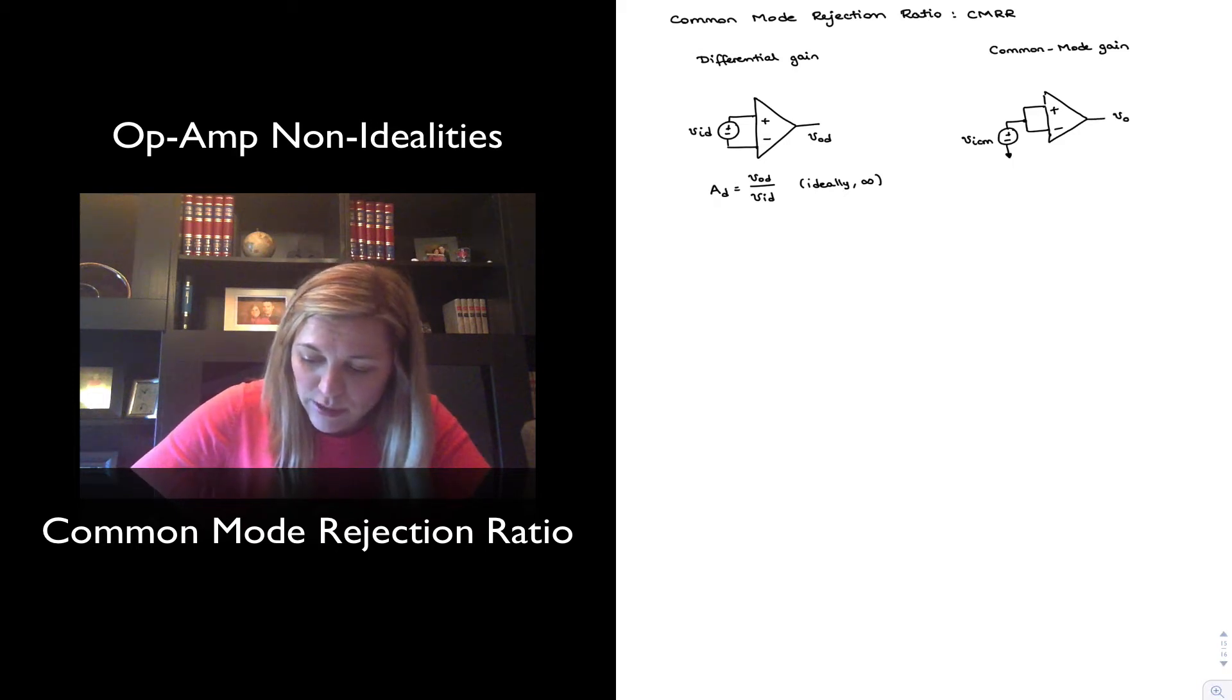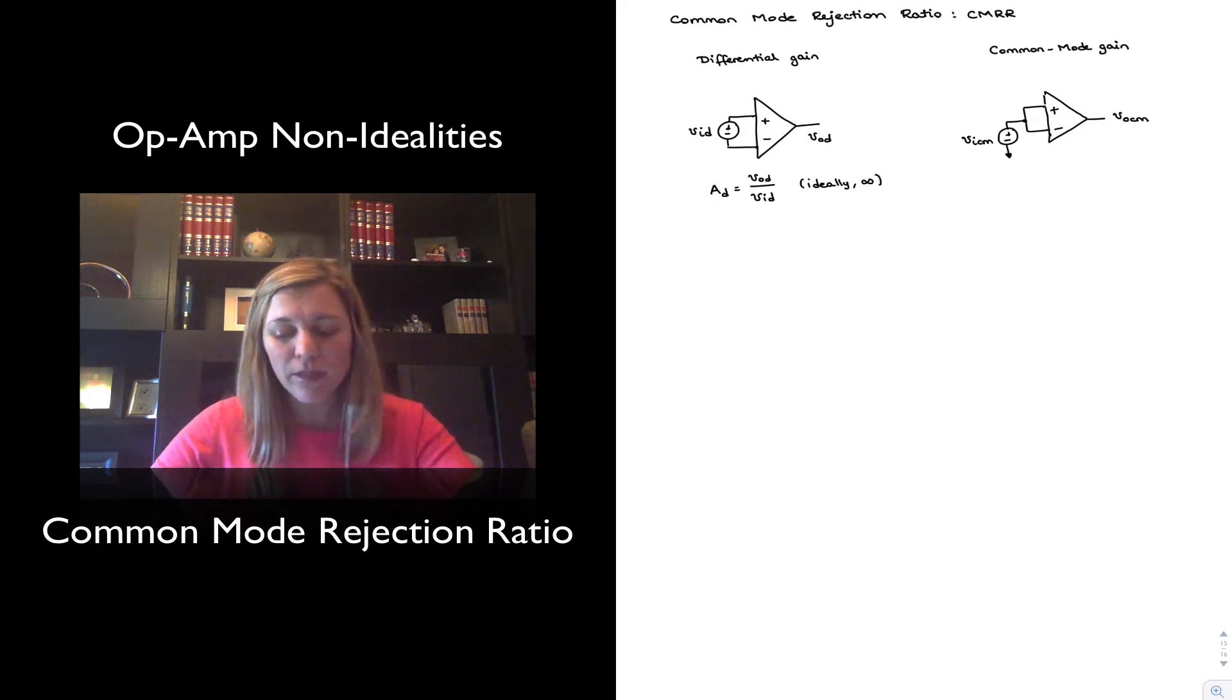And so I will get an output V-O-C-M. And again, I'm talking about just the effect of the non-zero Common Mode gain as opposed to other offset effects. So ignoring all the other offset effects, even if we don't have any sources of offset, if I apply a Common Mode input signal across the terminals of the op-amp, I'm still going to get a non-zero output due to the finite Common Mode Reduction Ratio or non-zero Common Mode gain.